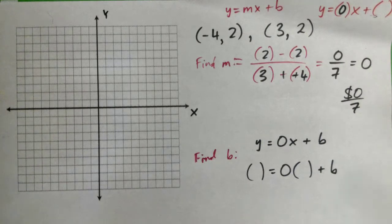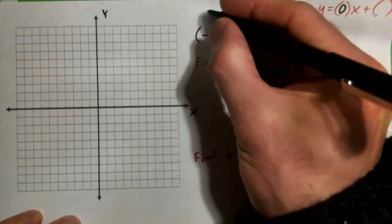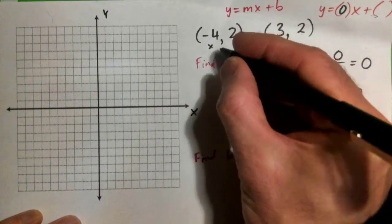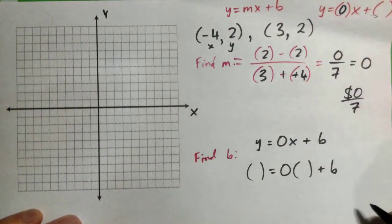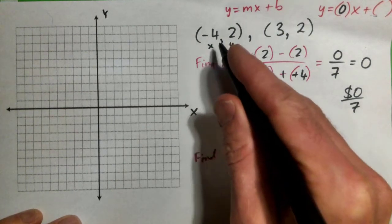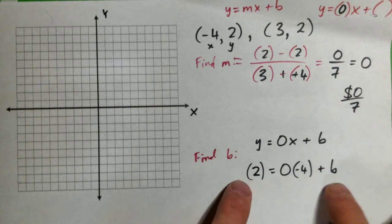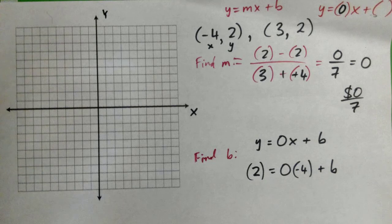So you can either use this point or this point. Which one do you want to use? It doesn't matter. First one. All right, so the x value is -4, this y value is 2. So for y we plug 2, for x we plug -4. And now we've got an equation with just b in it.